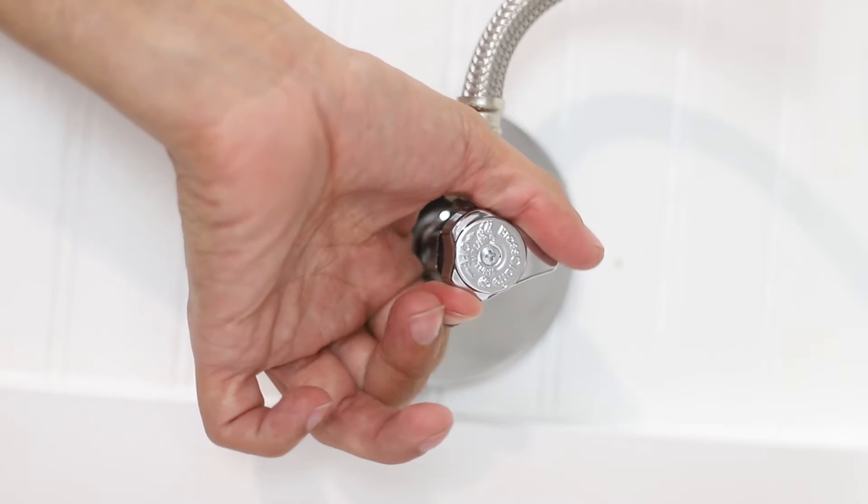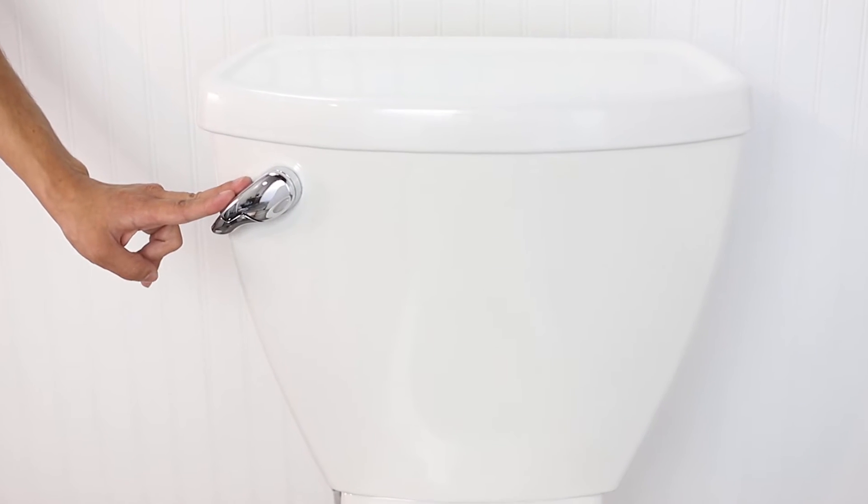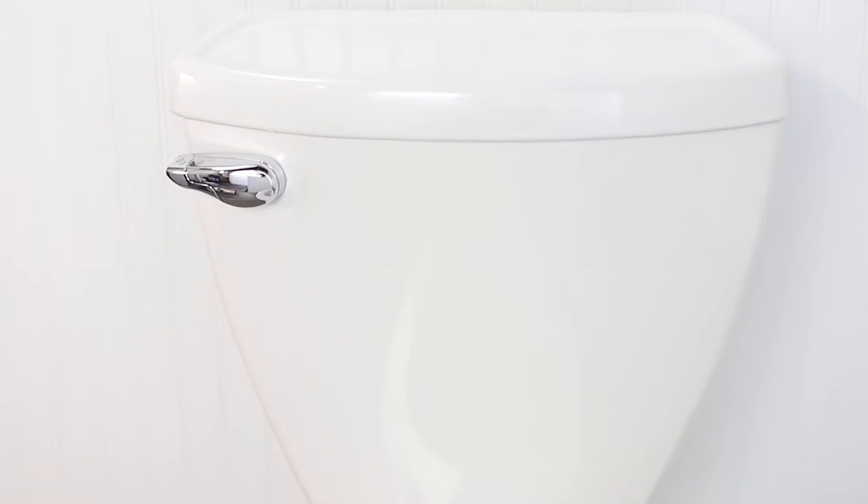Turn off the toilet water supply at the shut-off valve at the wall. Flush your toilet and hold down the flush handle until the water is fully drained.